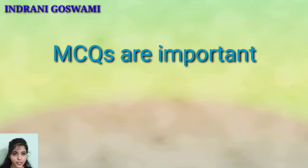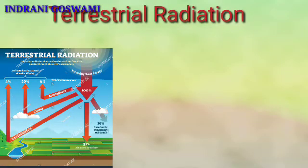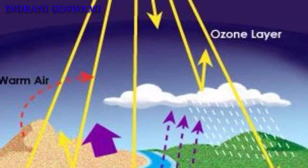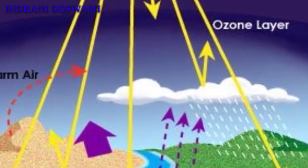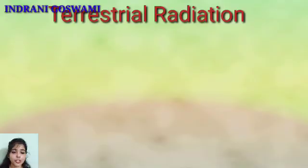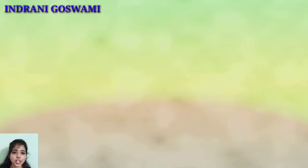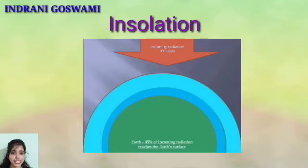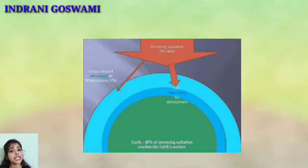The next type is terrestrial radiation. The solar radiation strikes the surface of the Earth, and then the Earth's surface radiates that heat back to space — this entire process is known as terrestrial radiation. The basic difference between insolation and terrestrial radiation is: in insolation, only the amount of heat is received, whereas in terrestrial radiation the energy is also radiated back. When radiated back, it forms long waves.